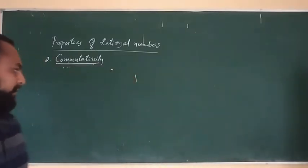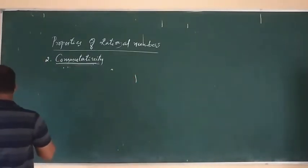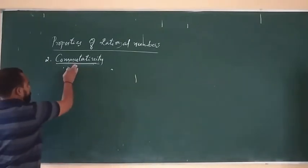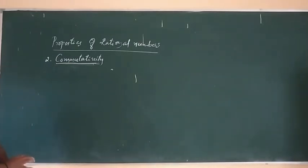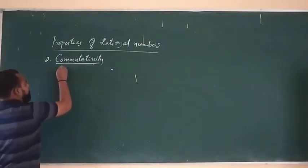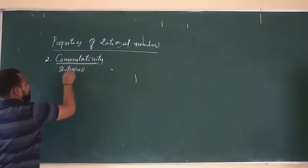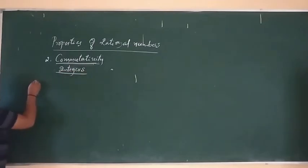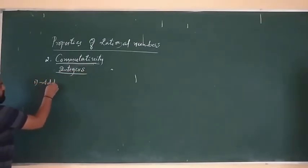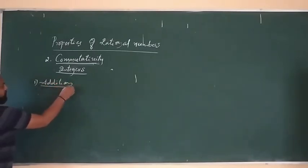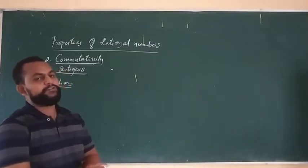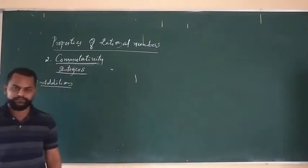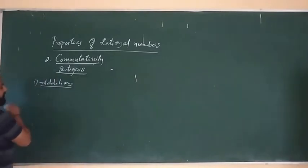The second one is the commutative property of the four operations for integers. Integers include all positive numbers and negative numbers together with zero. Let's take an example.